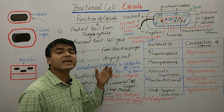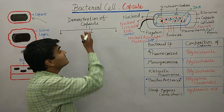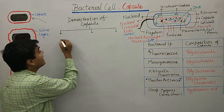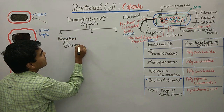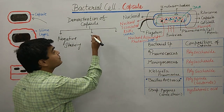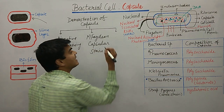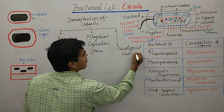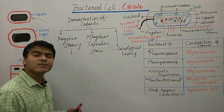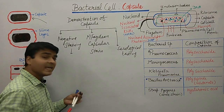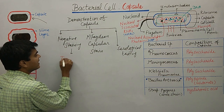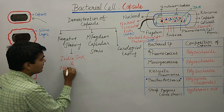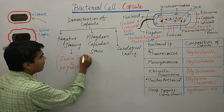Now we will discuss the demonstration or visualization of the capsule — the methods by which we can identify the capsule. There are three methods: the first is negative staining, the second is amphibian capsule staining, and the third is serological testing. In negative staining, we use India ink and nigrosine stain.